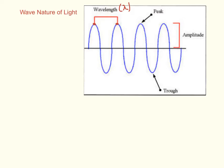Remember, a peak is the top, the trough is the bottom, and the height above the origin is the amplitude. So if you were talking about a sound wave, for instance, the amplitude would be how loud it was. For a light wave, it's how bright it is.